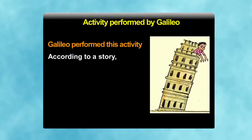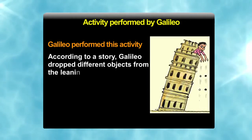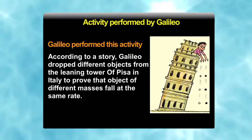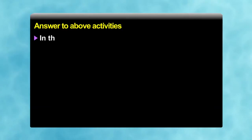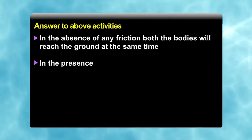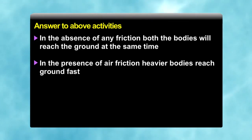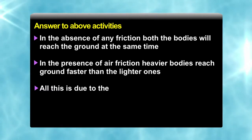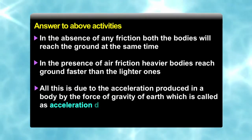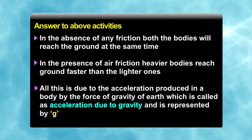The activity was also performed by Galileo long time back. According to a story, Galileo dropped different objects from leaning tower of Pisa in Italy to prove that objects of different masses fall at the same rate. Well, the answer to all these activities is that in absence of any friction, both the bodies will reach the ground at the same time. In the presence of air friction, heavier bodies reach ground faster than the lighter ones. All this is due to acceleration produced in a body by the force of gravity of earth which is called acceleration due to gravity and is represented by small g.